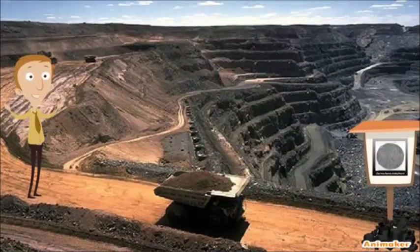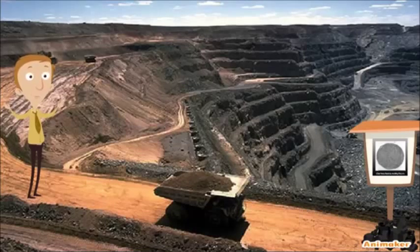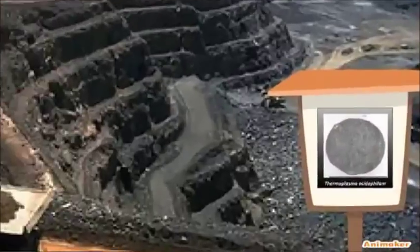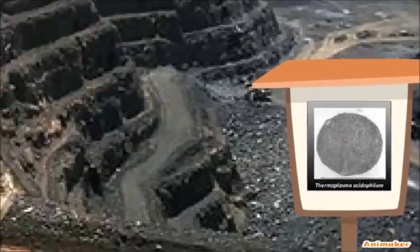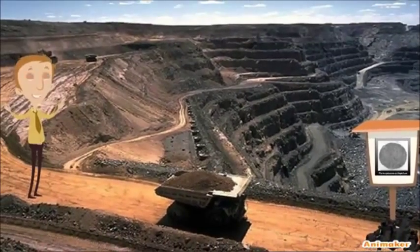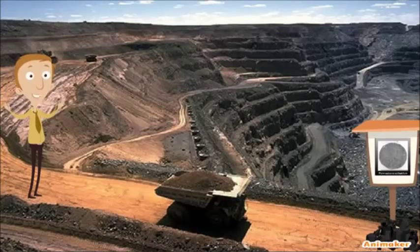Some microorganisms have the ability to grow optimally at extreme pH environments. In that way, we can have alkaliphiles whose optimal growth is above pH level 9, or acidophiles which grow optimally at pH environments below 3, such as Thermoplasma acidophilum, whose natural habitats are the sulfated fields and coal remains. One of the most impressive properties of those organisms is the use of their proton pumps to maintain a neutral pH internally.